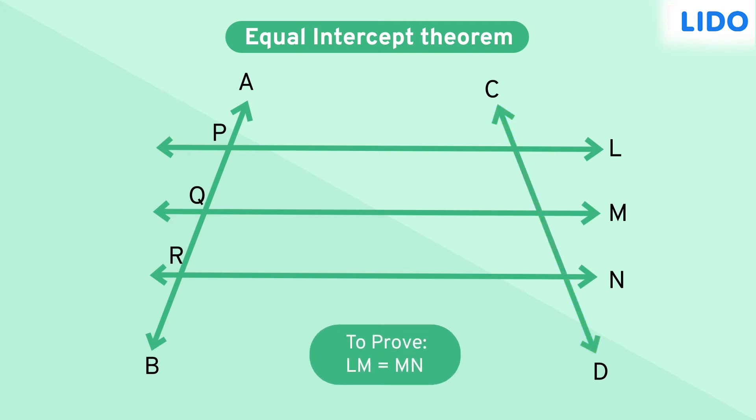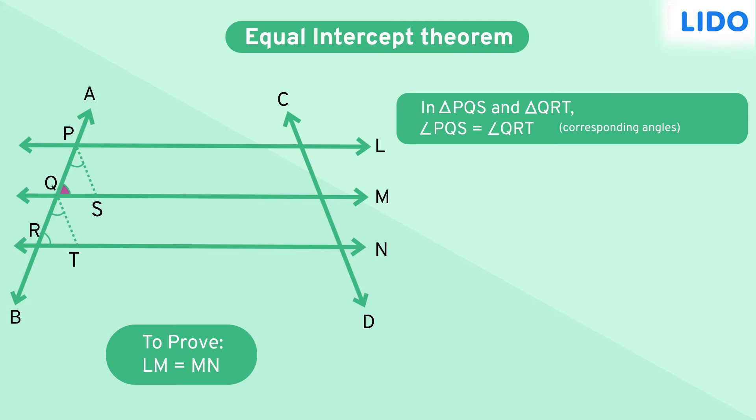To prove it, we will construct PS and QT parallel to CD. Let's first prove that triangles PQS and QRT are congruent to each other. Notice that angle PQS and angle QRT are forming the corresponding angles.